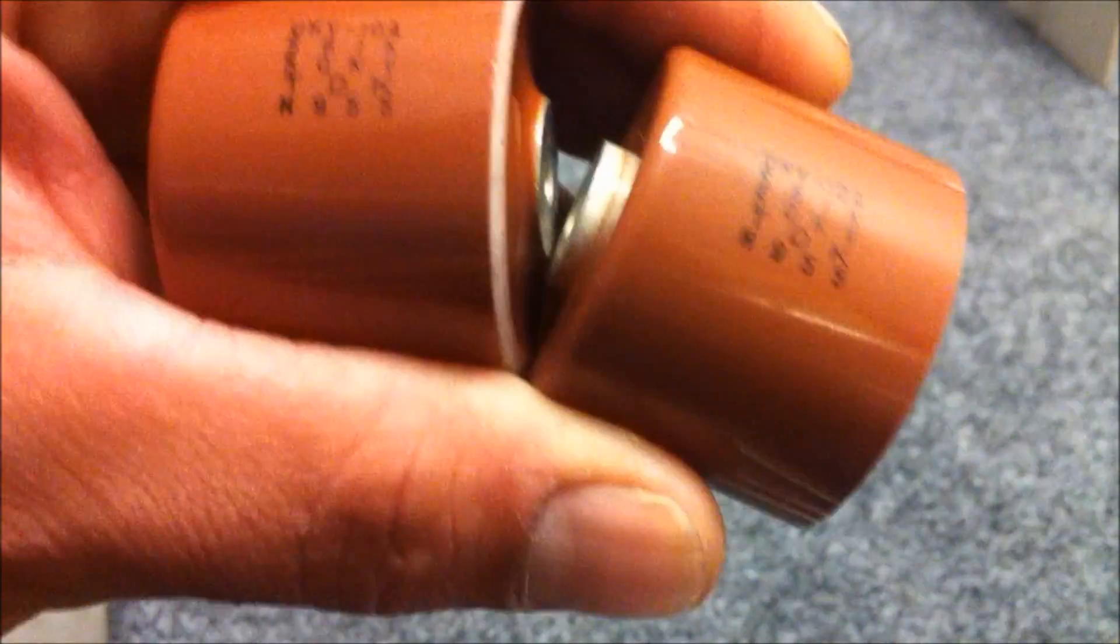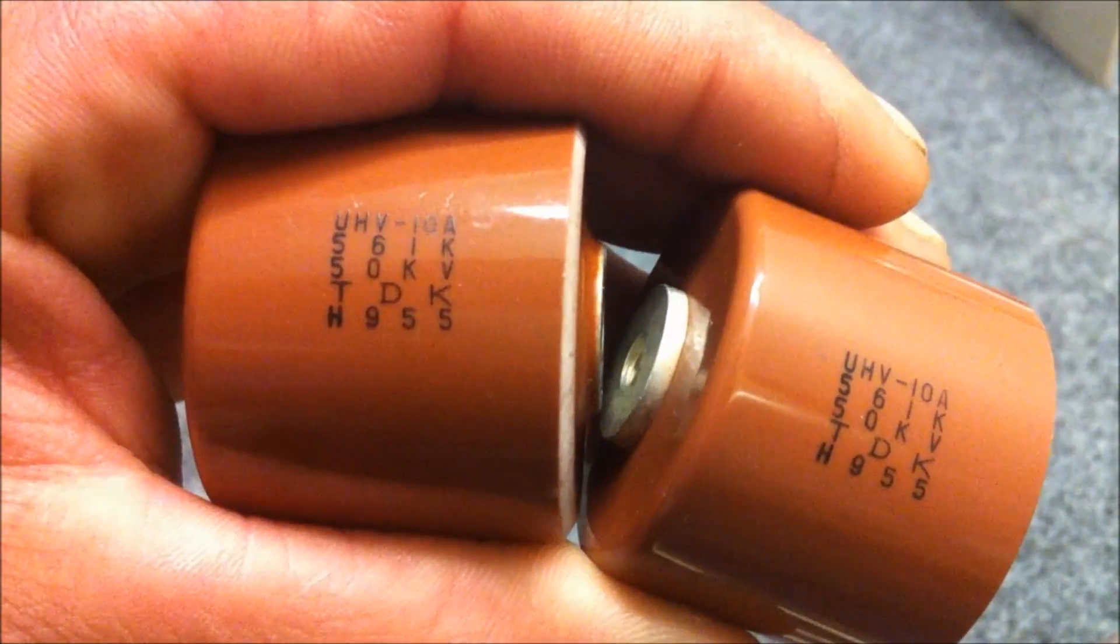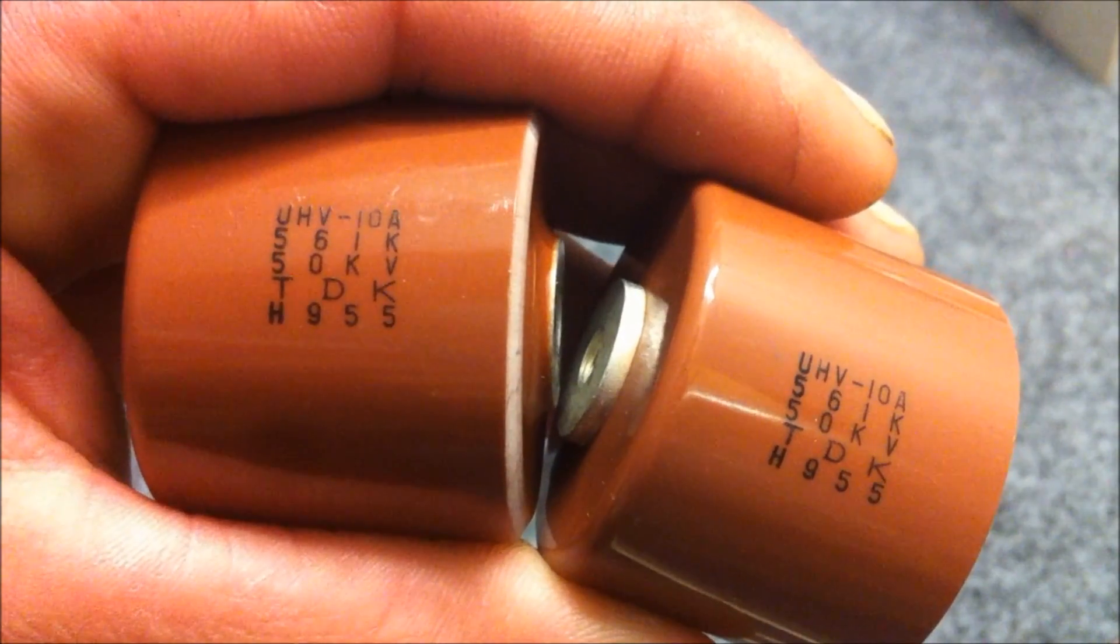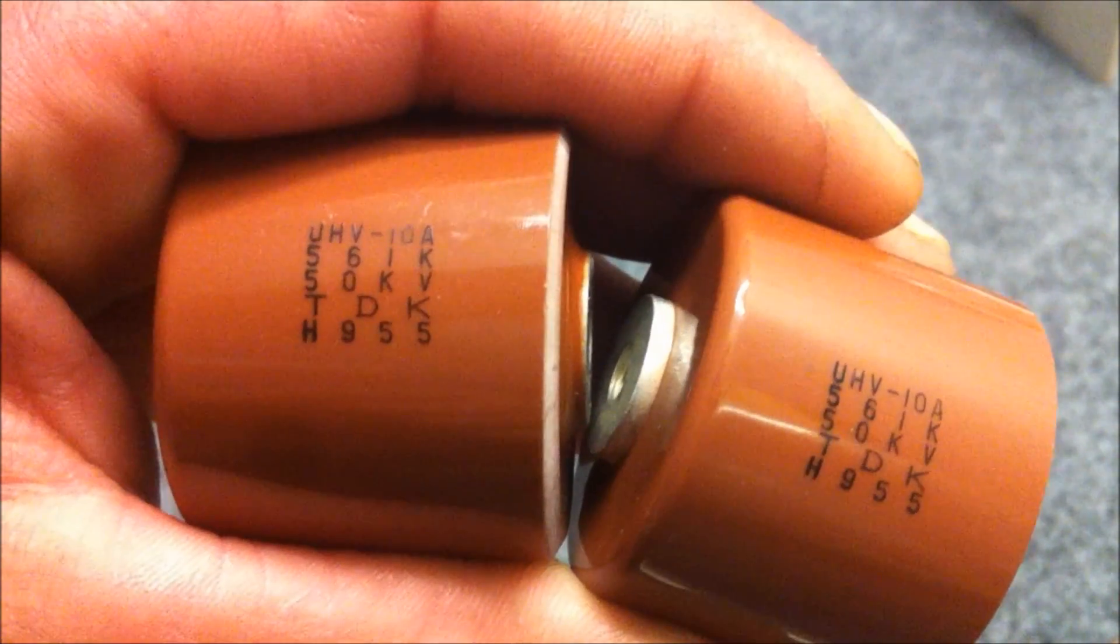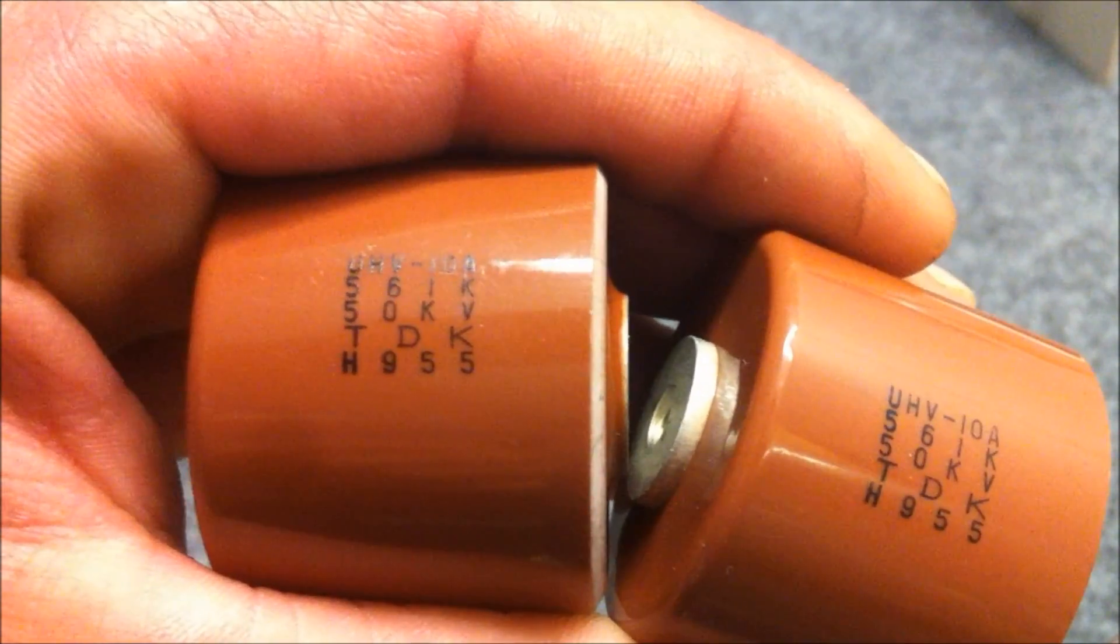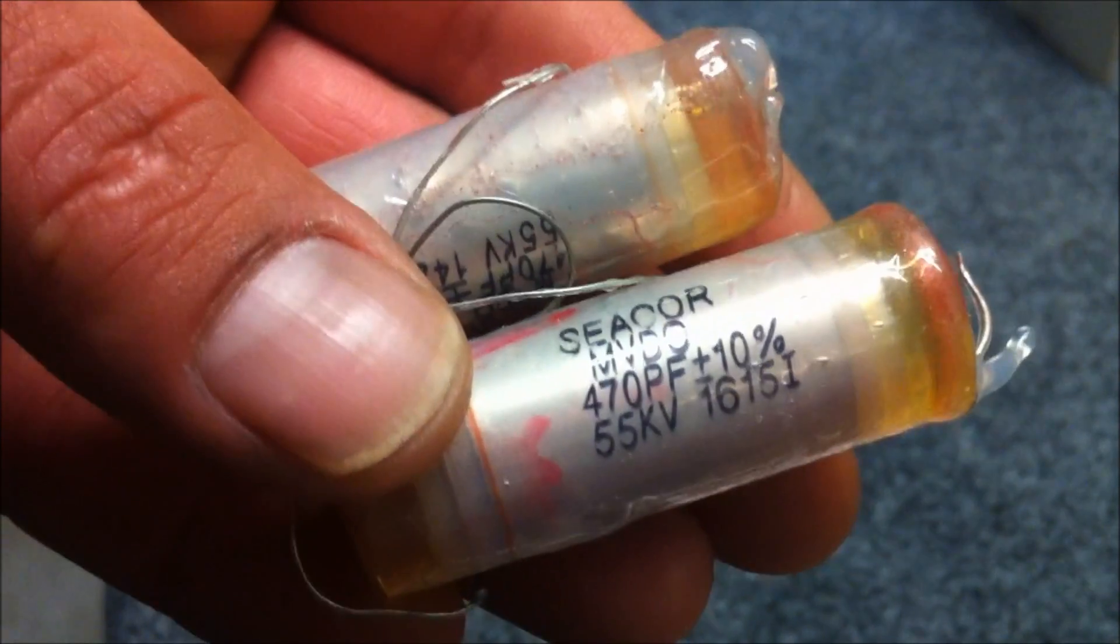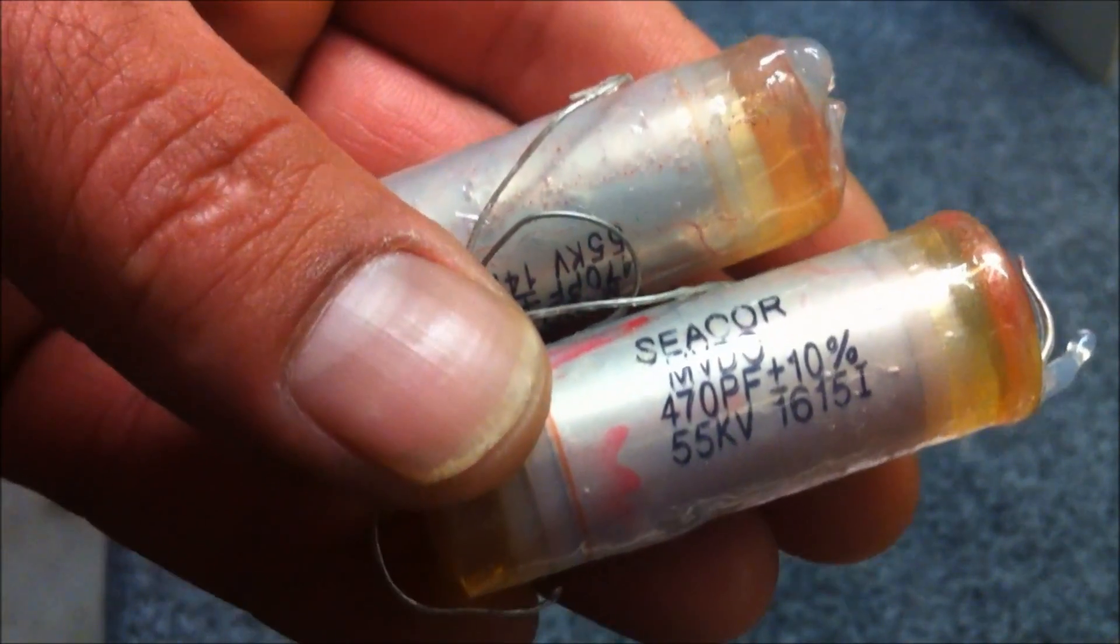And then I think we head into the 50kV range. And I have 2 of these doorknob caps. 560 picofarad at 50kV. And then I've got a couple of these 470 picofarad 55kVs. They're encapsulated in some sort of silicon. They look pretty funky.